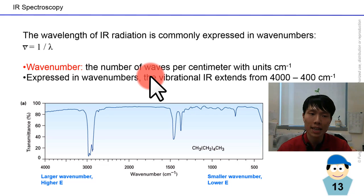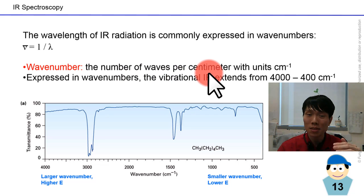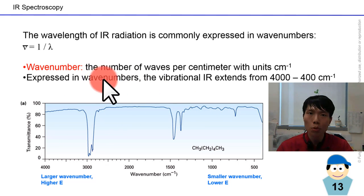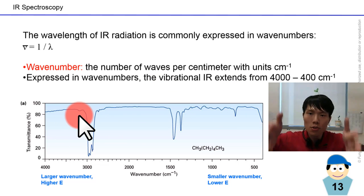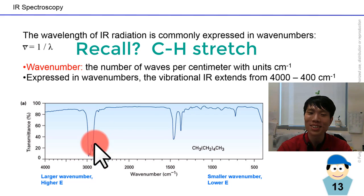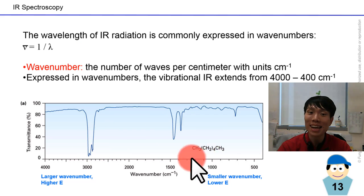The wavelength of the infrared radiation is normally expressed in wavenumber, which is the reciprocal of the wavelength. The wavenumber is defined as the number of waves per centimeter, so the unit is inverse cm. The wavenumber is proportional to the energy, to the frequency of the system. Normally the infrared spectra range from 4000 to 400 cm inverse.